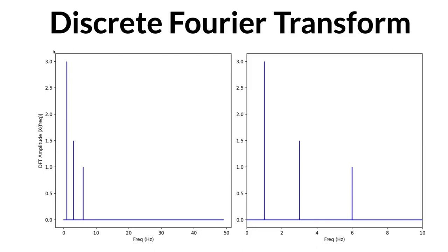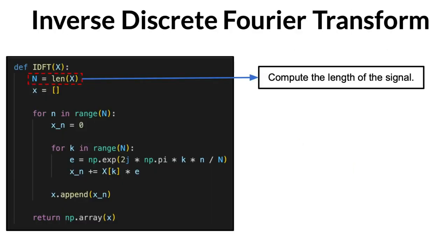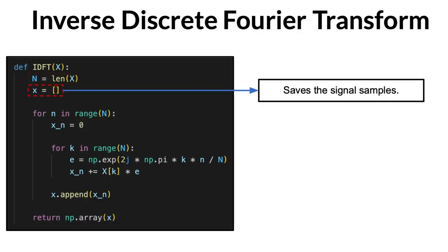Finally, the signal can be easily reconstructed using the inverse discrete Fourier transform, and here's how you do it in Python. Firstly, you extract the length of the spectrum, and declare the lowercase x variable, which will contain the reconstructed signal samples.